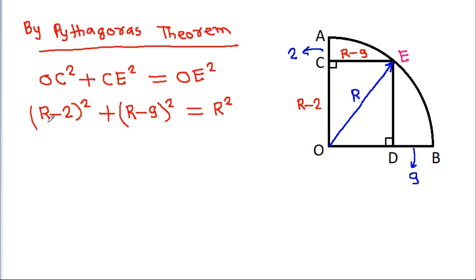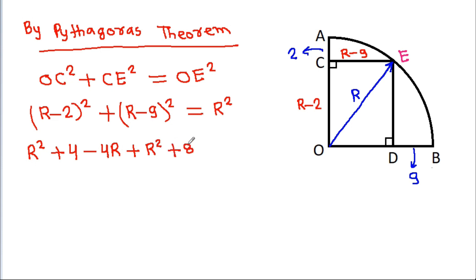Expanding: R² minus 4R plus 4, plus R² minus 18R plus 81, equals R². So we get 2R² minus 22R plus 85 equals R².